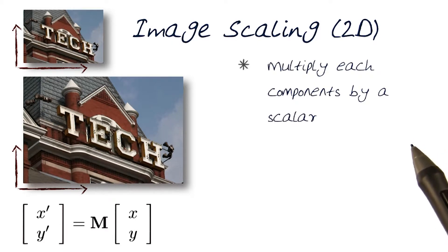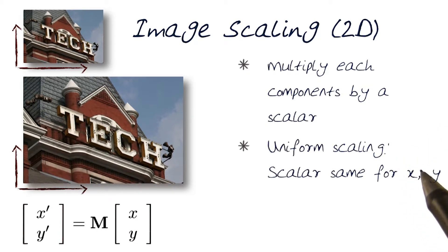Basically, the way I want to do scaling would be as simple, right? I would just multiply each component by a fixed scalar. And uniform scaling would basically be when the same scalars apply to both x and y's.